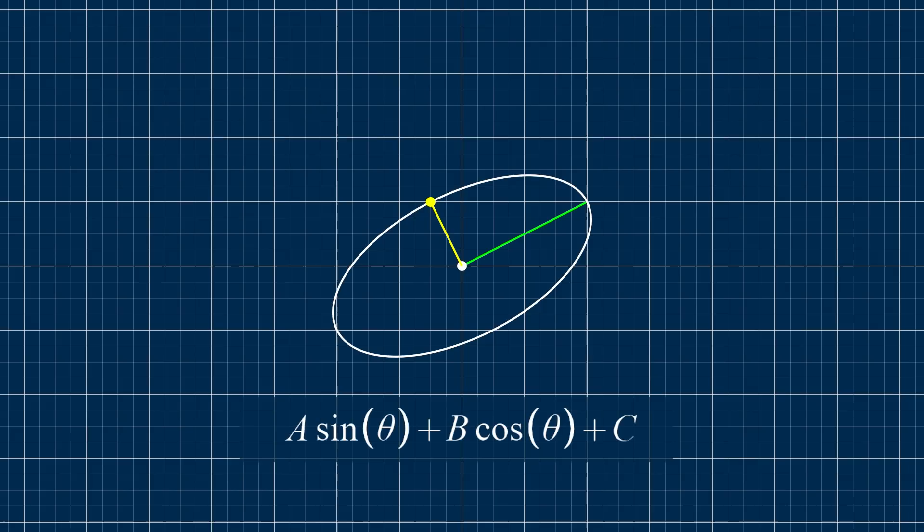Well, for an ellipse, it's actually pretty easy. You have two vectors, A and B, plus the center C. Then the points on the ellipse are just A sine theta plus B cosine theta plus C. And sweeping through a full rotation of theta gives you all the points on the ellipse.